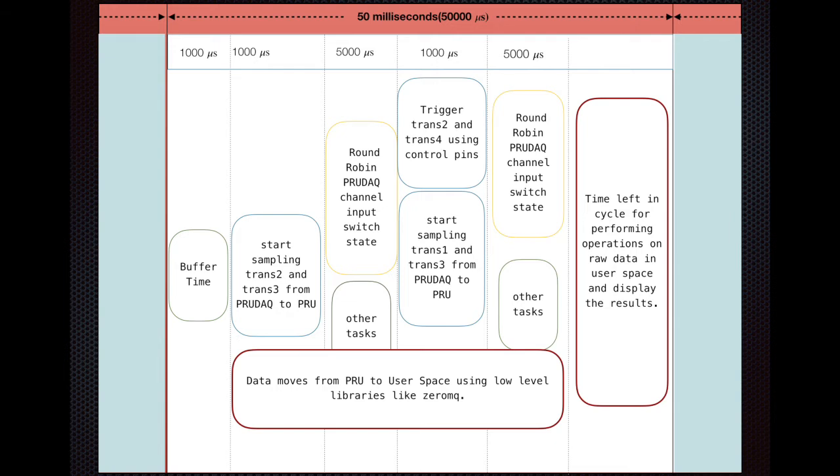This is the cycle we are going to repeat over and over until we have measured across the two dimensions. Once we have measured across the two dimensions, the time left in the cycle of 50 milliseconds we can use to transfer the data into user space and calculate the wind velocity.